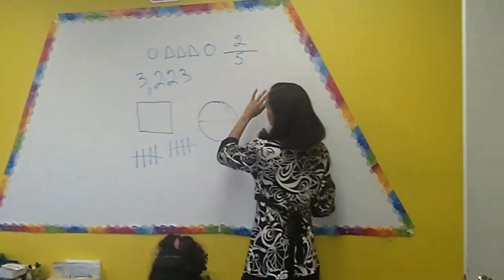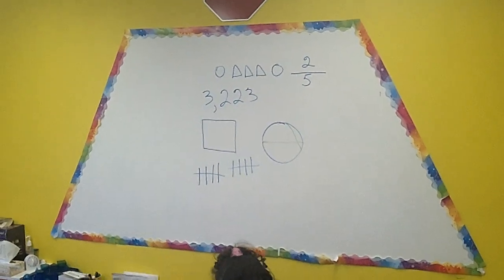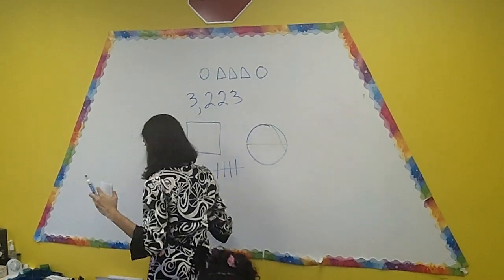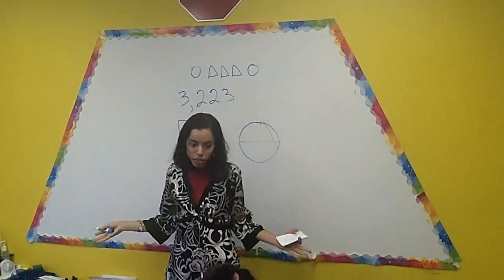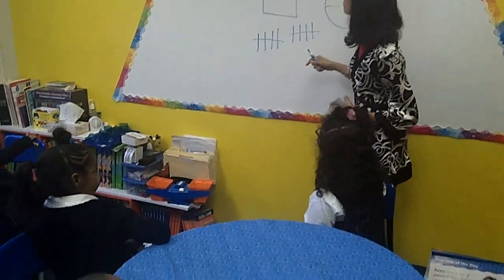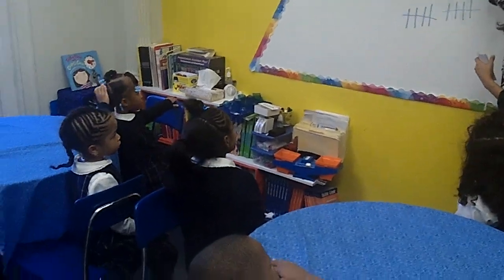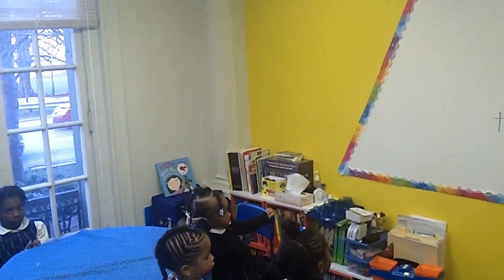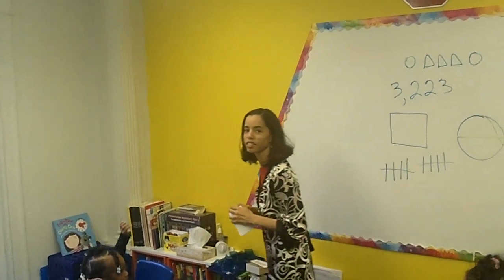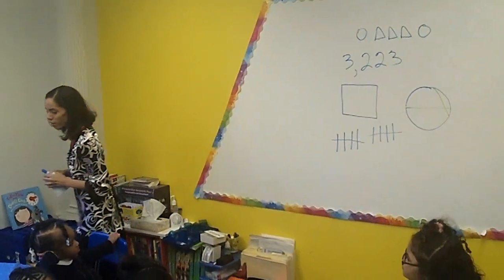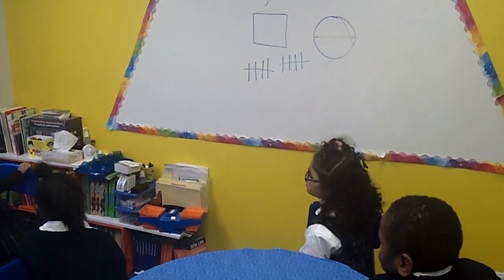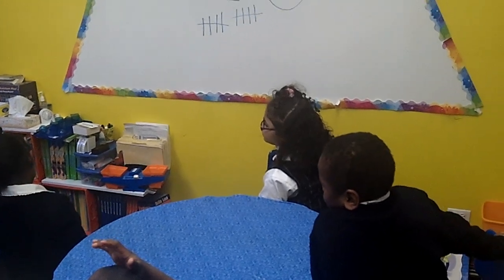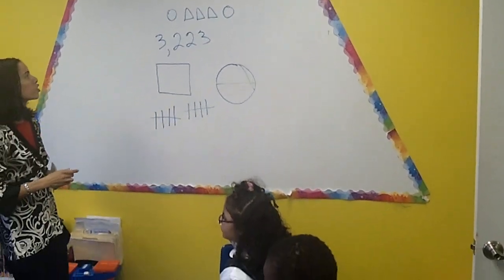Now I'm going to take away this fraction and do something different — it is called a ratio. My leaders also know how to find ratios and write them out. I would like for someone to tell me what is the ratio of triangles to circles. Think really hard — what is the ratio of triangles to circles? Nicholas, what is the ratio of triangles to circles?